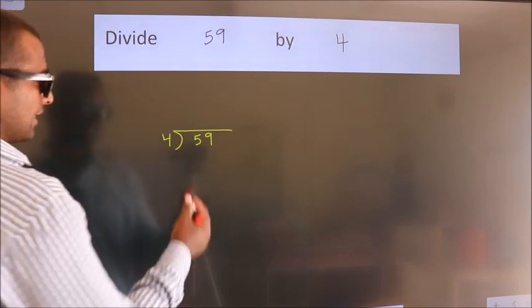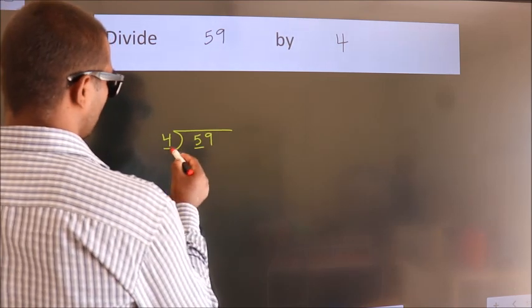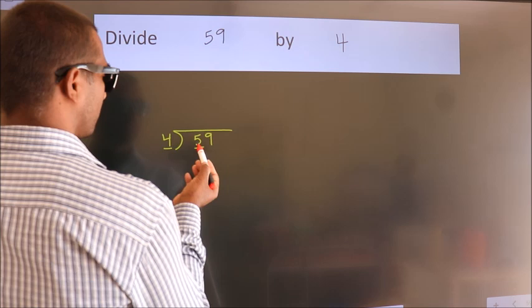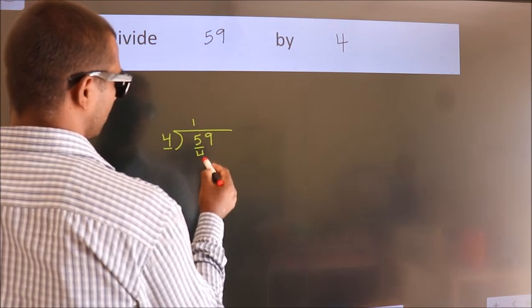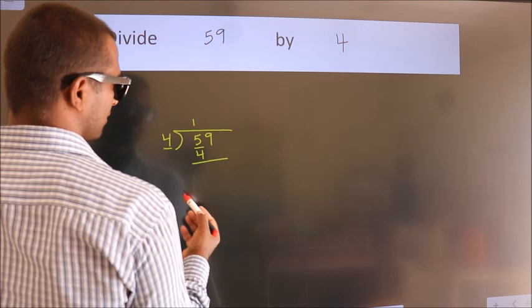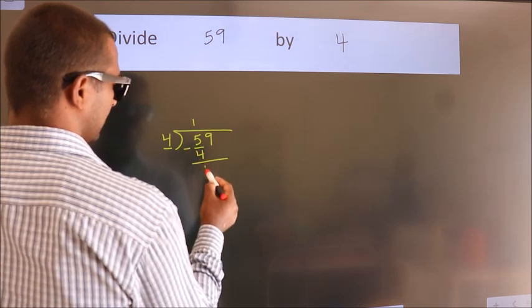Next. Here we have 5, here 4. A number close to 5 in 4 table is 4 once, 4. Now we should subtract. We get 1.